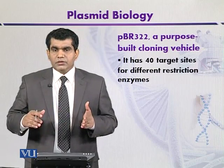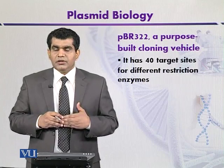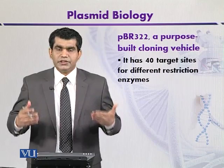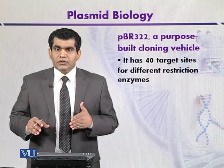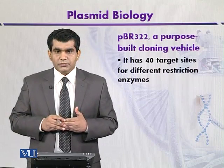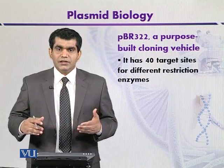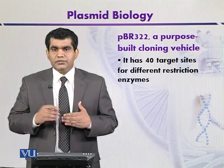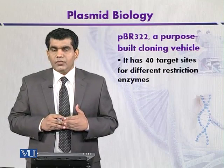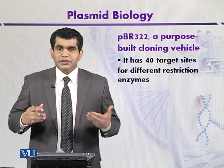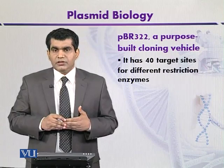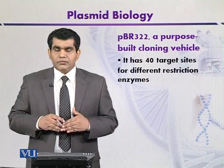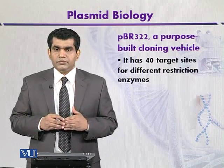If we look at the target sites, we realize that around 11 restriction sites are present within the gene encoding tetracycline resistance, and around 2 restriction sites are also within the tetracycline resistance gene, giving it an overall total of about 13 restriction sites for different restriction endonucleases. Other restriction sites are present at other locations on PBR322, but they are not commonly used.